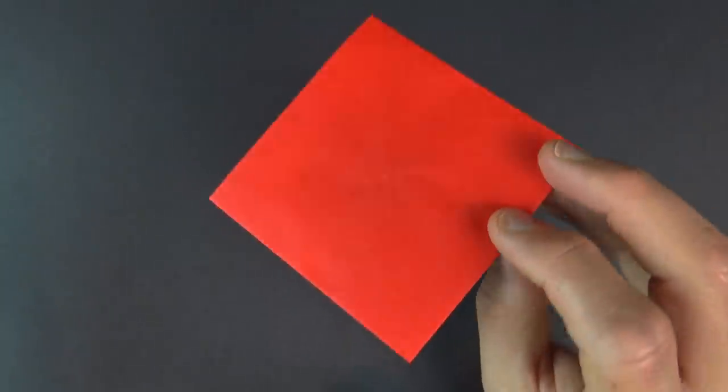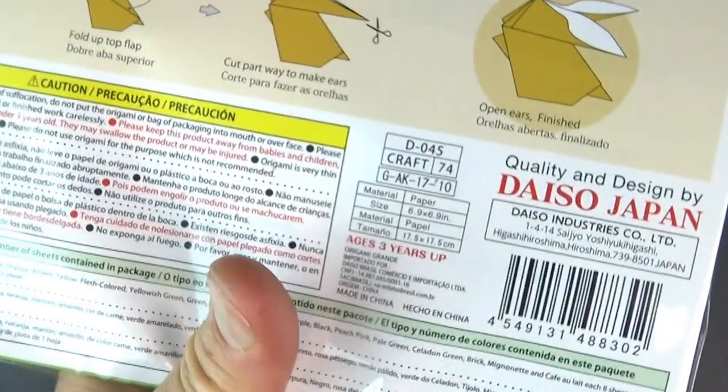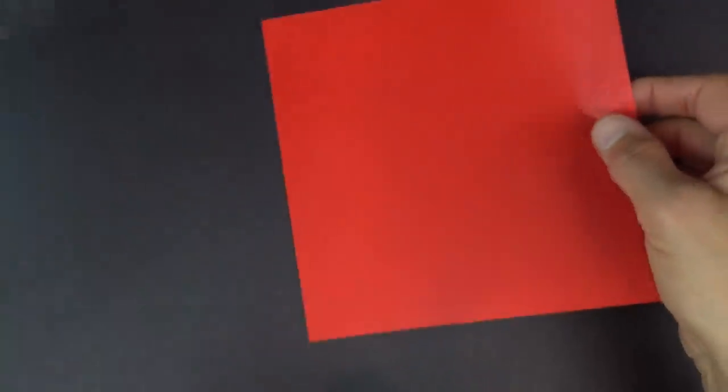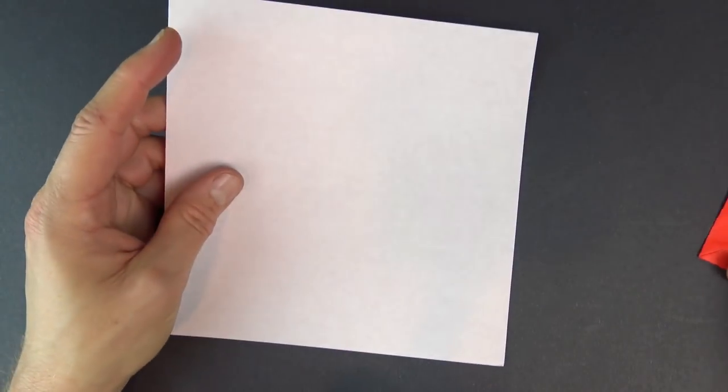Ready, set, here goes. Alright, so for this Roblox Flicker, I'm going to use a 7 inch square of kami. You could use a sheet of printer paper cut square.